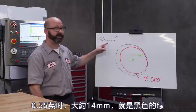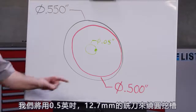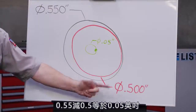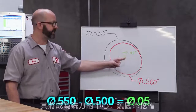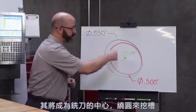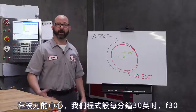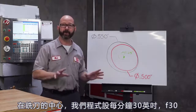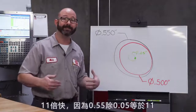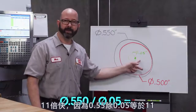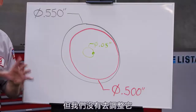Here is the hole that we want to mill at 550 thousandths of an inch in diameter, about 14 millimeters — that's the outside black line. We're going to mill this circular pocket with a tool that is 0.5 inches, 12.7 millimeters. 550 minus 500 gives us 50, or 0.05 inches. That's going to be the circle at the center of our tool created as the tool moves around to make the pocket — that's where our feed rate is programmed from. At the center of our end mill, our tool is programmed at 30 inches per minute, F30, but out here at the edge of our tool, where we're at the 550 diameter, things are moving 11 times faster, because 550 divided by 50 equals 11. This outer circle is 11 times bigger than the inside circle that our feed rates are based on, and we haven't adjusted for that.